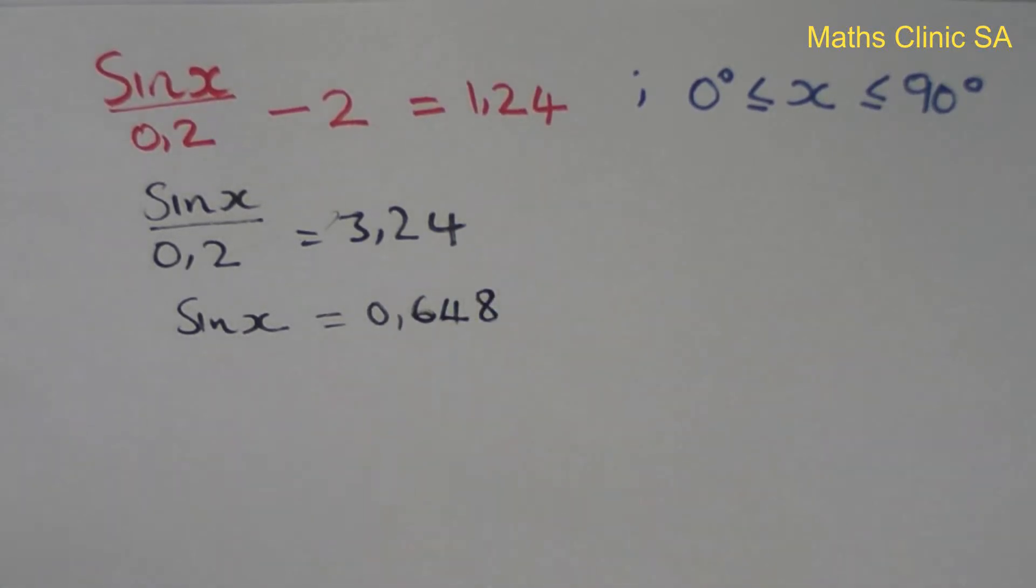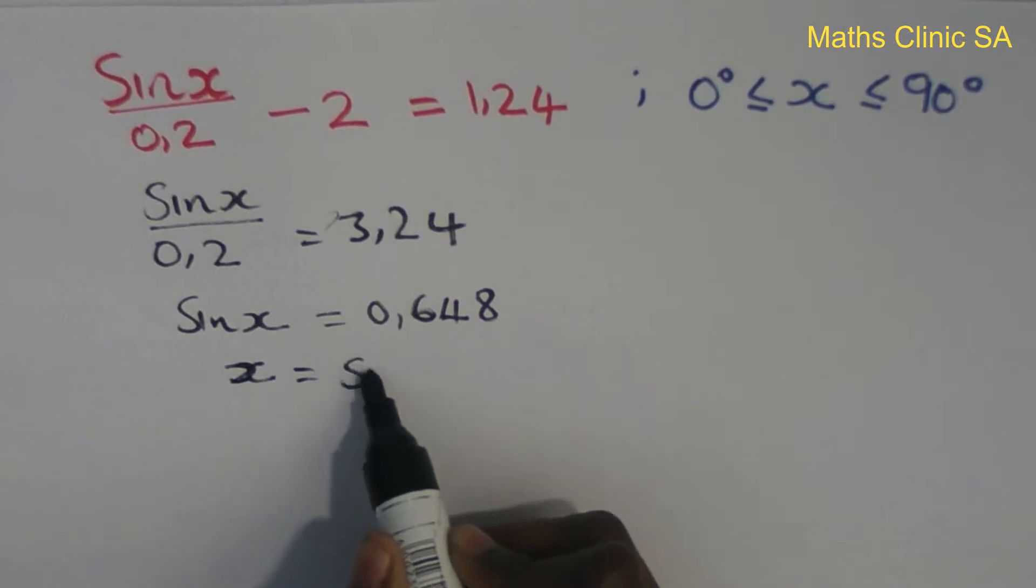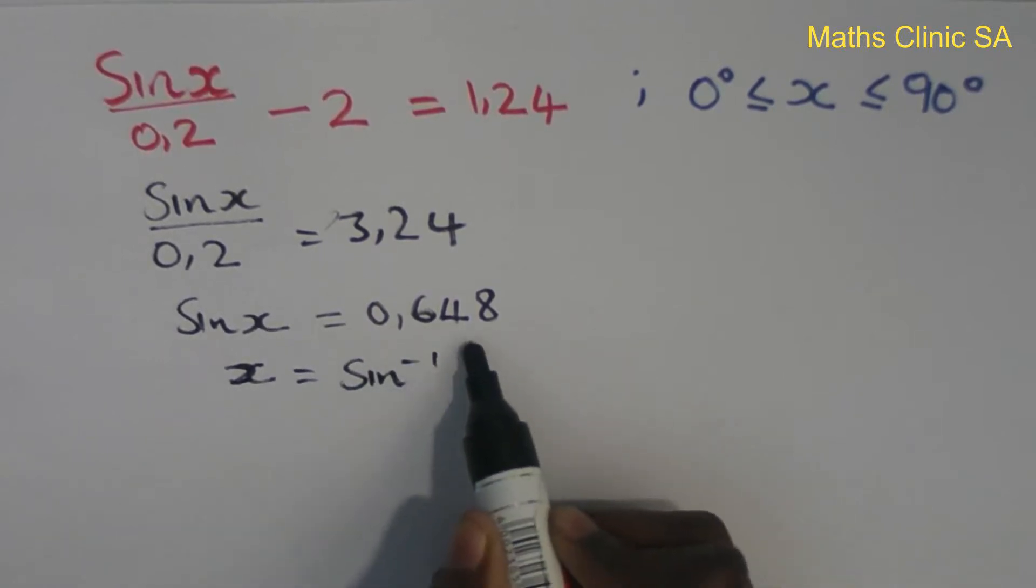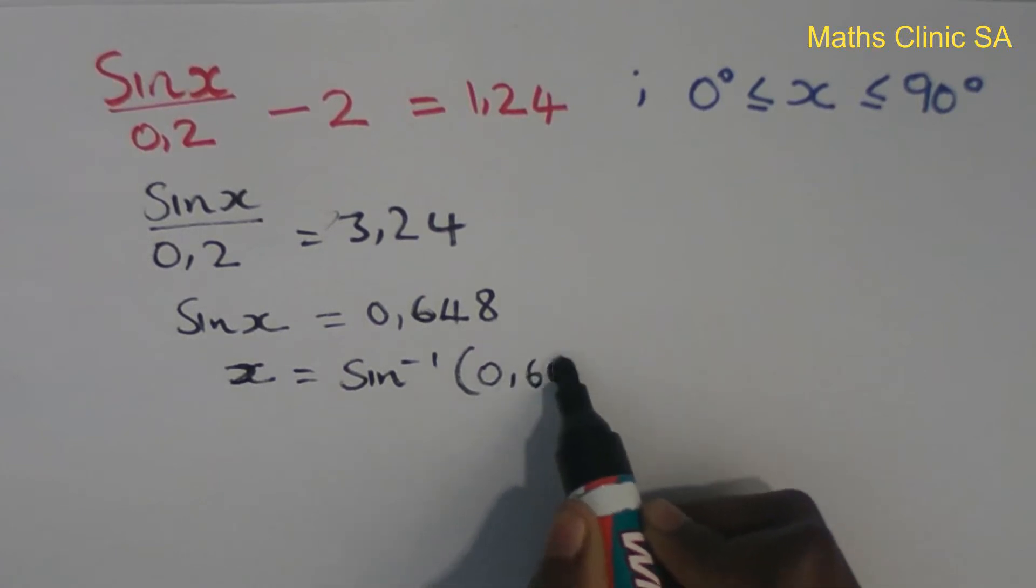So to find x, I will use the inverse sine function. X equals sine inverse of 0.648.